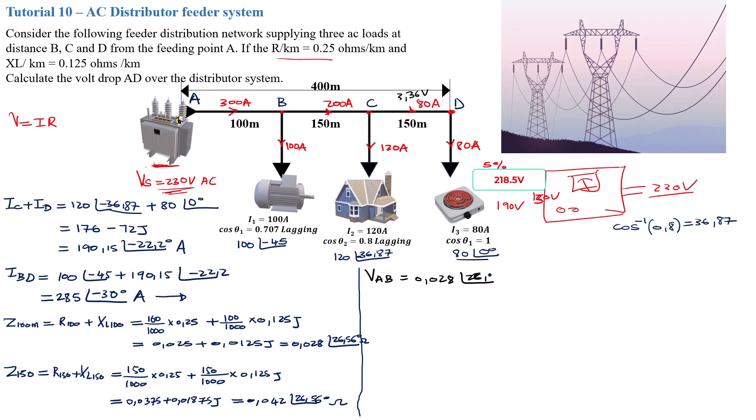V_AB is going to be, where is the impedance? That's a 100 meter section, so it's 0.028 with an angle of 26.56 degrees times our current, 285 with an angle of negative 30 degrees. This gives you a voltage drop of 7.98 with an angle of negative 3.44 degrees volt. So you basically have an approximate voltage drop of 8 volts on this section here.